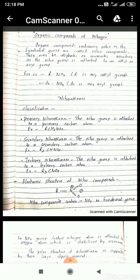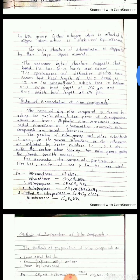When we see the electronic structure of a nitro compound, R is attached with the nitrogen, and the nitrogen is attached with two oxygen bonds with partial and semi bond. Nitro compounds contain NO2 as a functional group. In the nitro group, the central nitrogen atom is attached to the oxygen atom, which is stabilized by resonance. The polar structure of nitroalkanes is supported by their large dipole moment. The resonance hybrid structure suggests that the two N-O bonds are equal. Spectroscopic and diffraction studies have shown that the bond length of N-O bond is 121 pm in nitromethane, which lies between N-O single bond length of 136 pm and N=O double bond length of 114 pm.